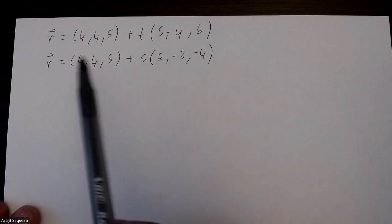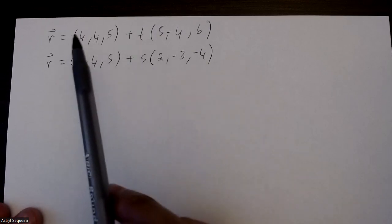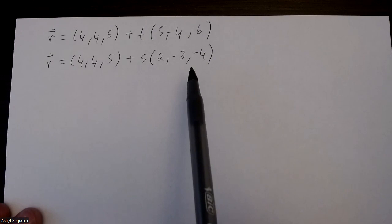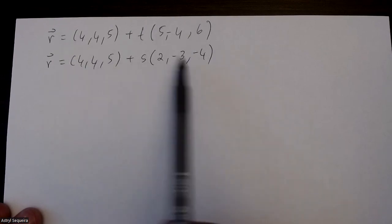Okay, so I want to find the Cartesian equation of the plane that passes through these two points or contains these two lines over here.